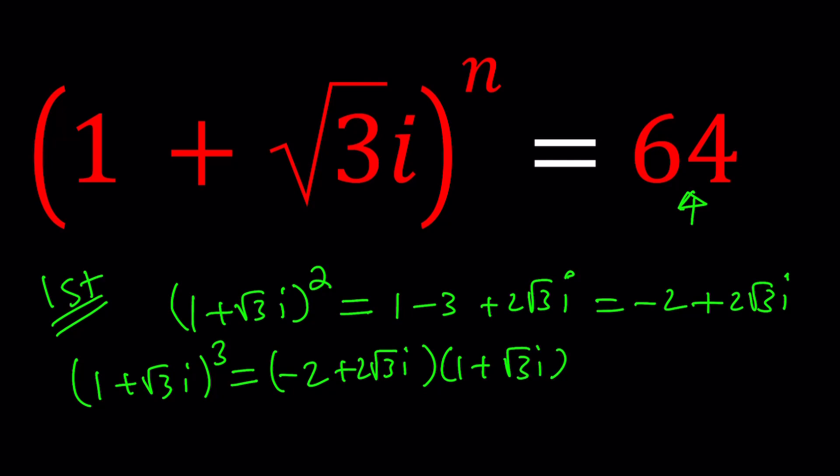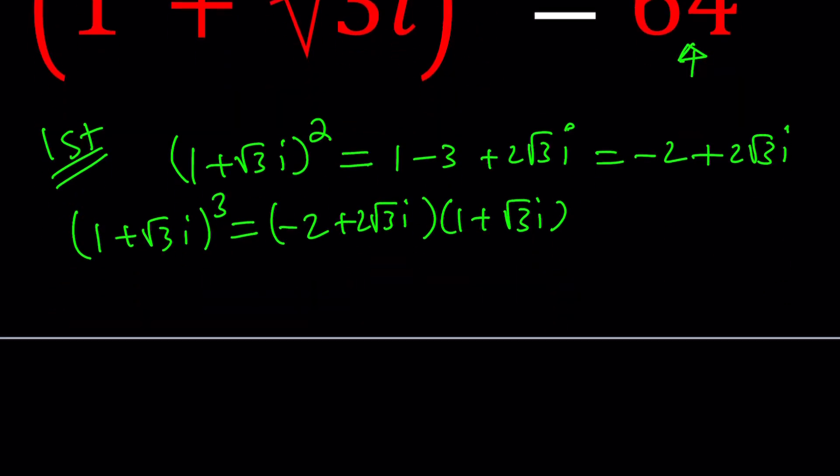There's a formula for a plus b cubed. No matter what you do you're going to get the same thing. Negative 2 minus 2 root 3i plus 2 root 3i, and then we got 6i squared which is minus 6 and this gives us negative 8 and these two numbers cancel out. Nice. You know why it's nice? Because I got a real number. It's a negative number and I didn't get 64 but I'm so close.